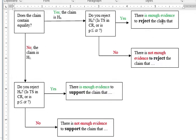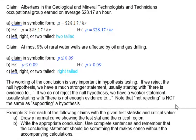The only time we reject a claim is when it's the null hypothesis. We're going to use this flowchart as a learning tool, and eventually you should be able to follow the logic without it. For the examples, we'll draw a curve showing the test statistic and the critical region, then write an appropriate conclusion. If the test statistic falls inside the critical region — the shaded area — we reject the null hypothesis. If it doesn't fall in there, we do not reject the null hypothesis and write a not-enough-evidence statement.